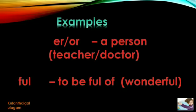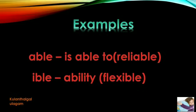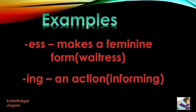If you add -able at the end of the root word, the meaning of -able is able to. Example: reliable. Similarly, -ible means ability. An example for -ible is flexible.